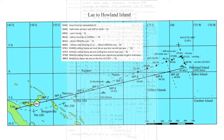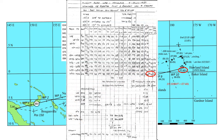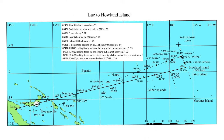At 0741 local — the original ETA for Howland — Earhart reported: 'KHAQQ calling Itasca. We must be on you but cannot see you. Gas is running low. Been unable to reach you by radio. We are flying at 1,000 feet.' But they could not see the island or the smoke from the ship, and they did not know if they were north or south.